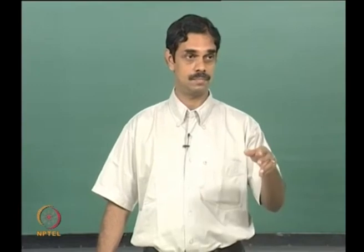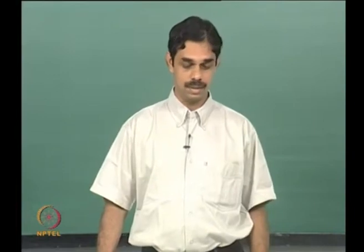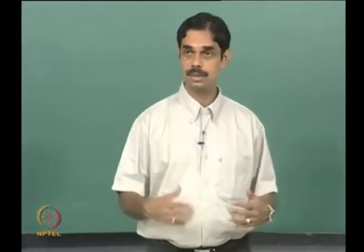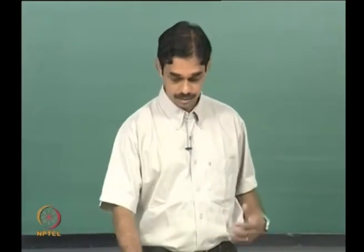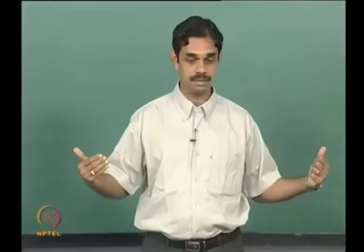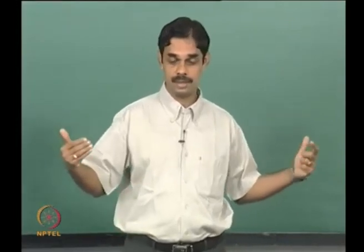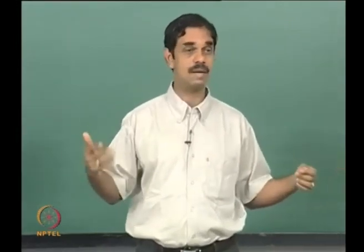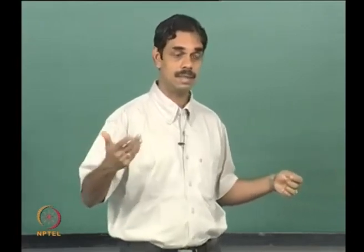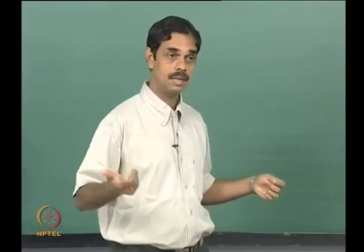Are there any questions? We will redo this issue. Let us start from the differential equation d chi by dt, where chi is the state variable vector. You have the evolution operator: d chi by dt plus L chi equals 0.